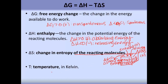And finally, the T being multiplied with delta S is temperature — and that's temperature in Kelvin. Something to keep in mind about Kelvin: it's always going to be positive, so we always know that our T is going to be positive.